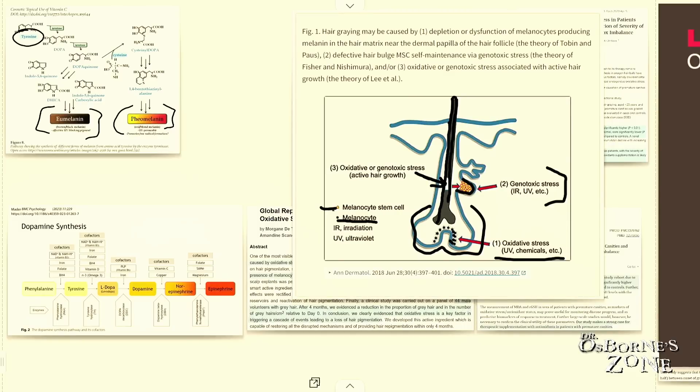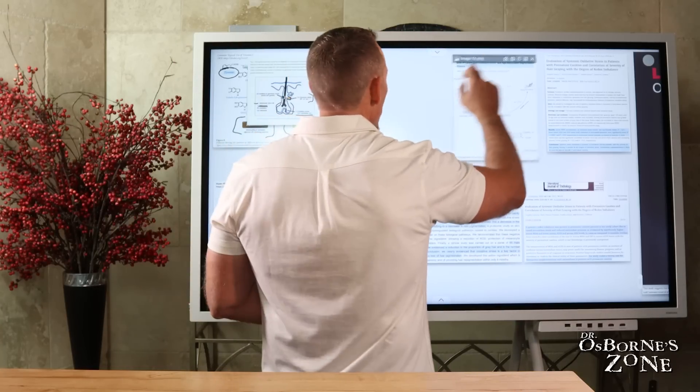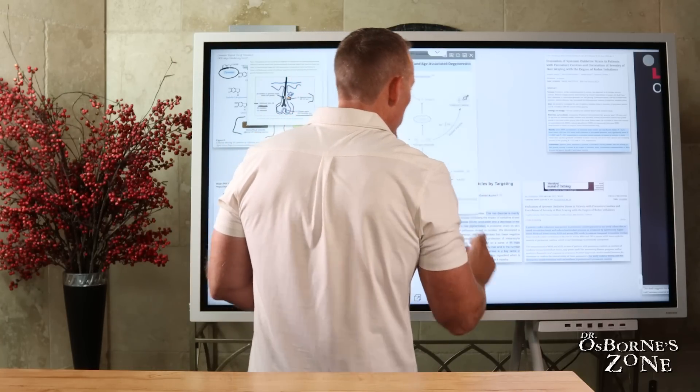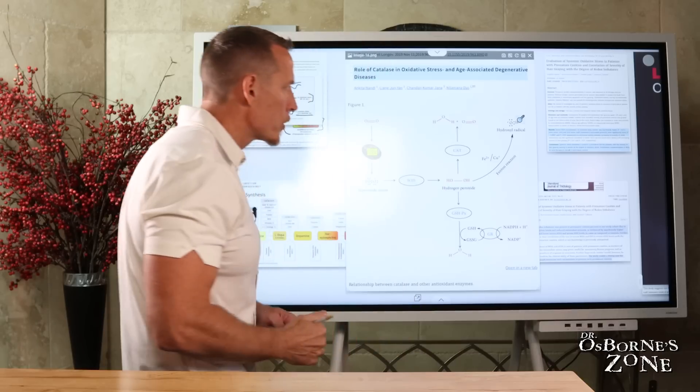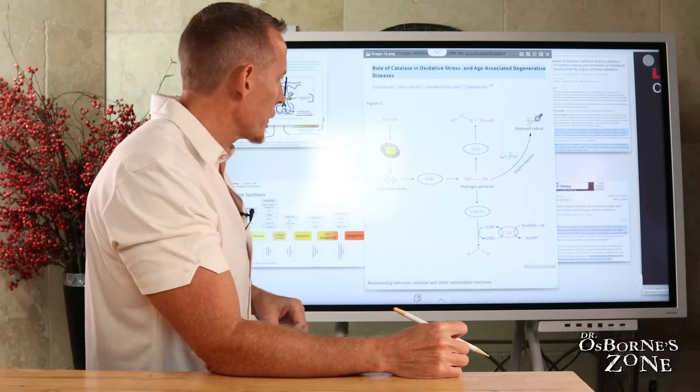All of these damages are oxidative in nature. And so let's have a deeper conversation about what that really means and what that looks like. Because if you understand this, you're going to understand how to protect your hair from prematurely graying. And a lot of the strategies that we're going to talk about are going to make so much better sense.